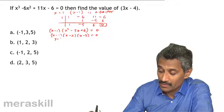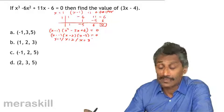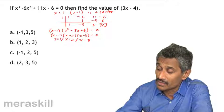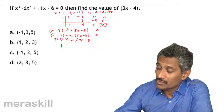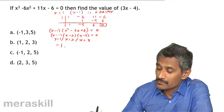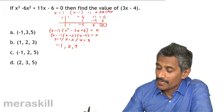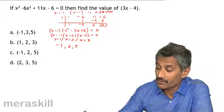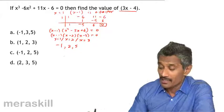So x = 1, 2, or 3. Substituting each into 3x - 4: when x = 1, 3(1) - 4 = -1; when x = 2, 3(2) - 4 = 2; when x = 3, 3(3) - 4 = 5. So the possible values of 3x - 4 are -1, 2, and 5.